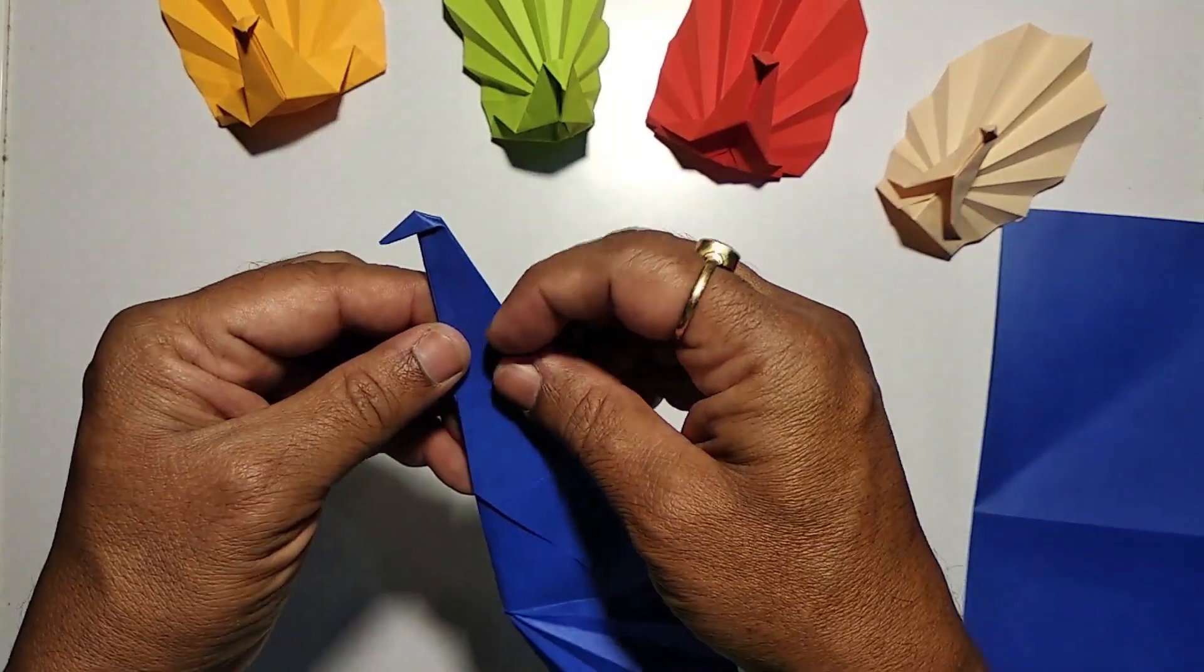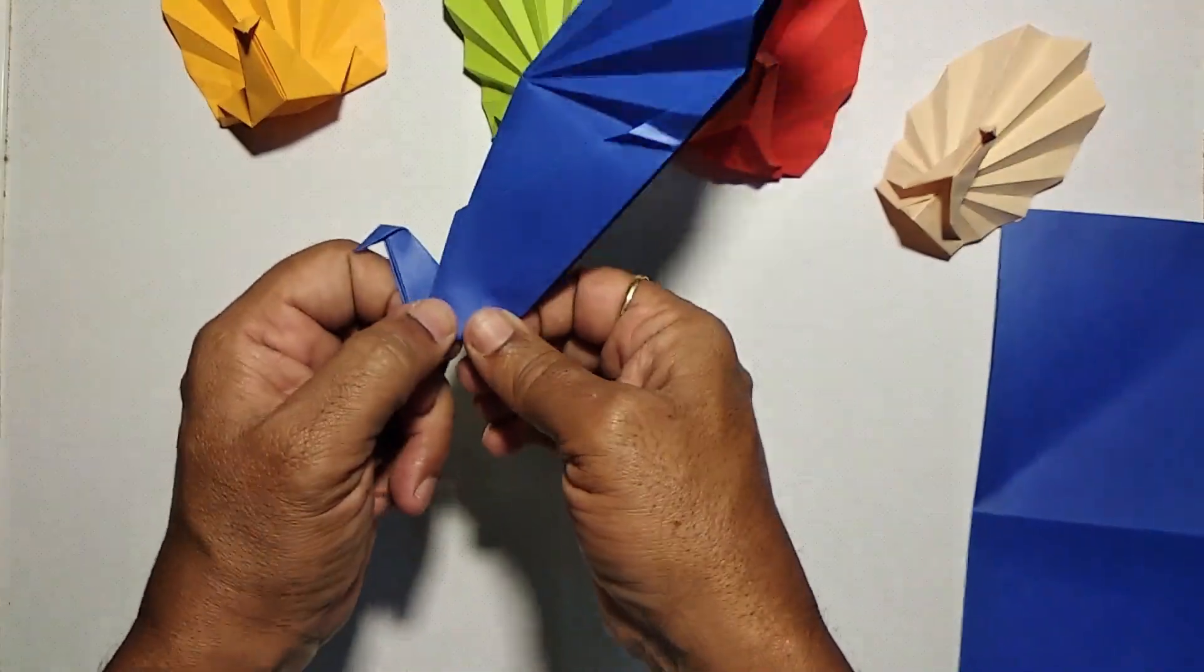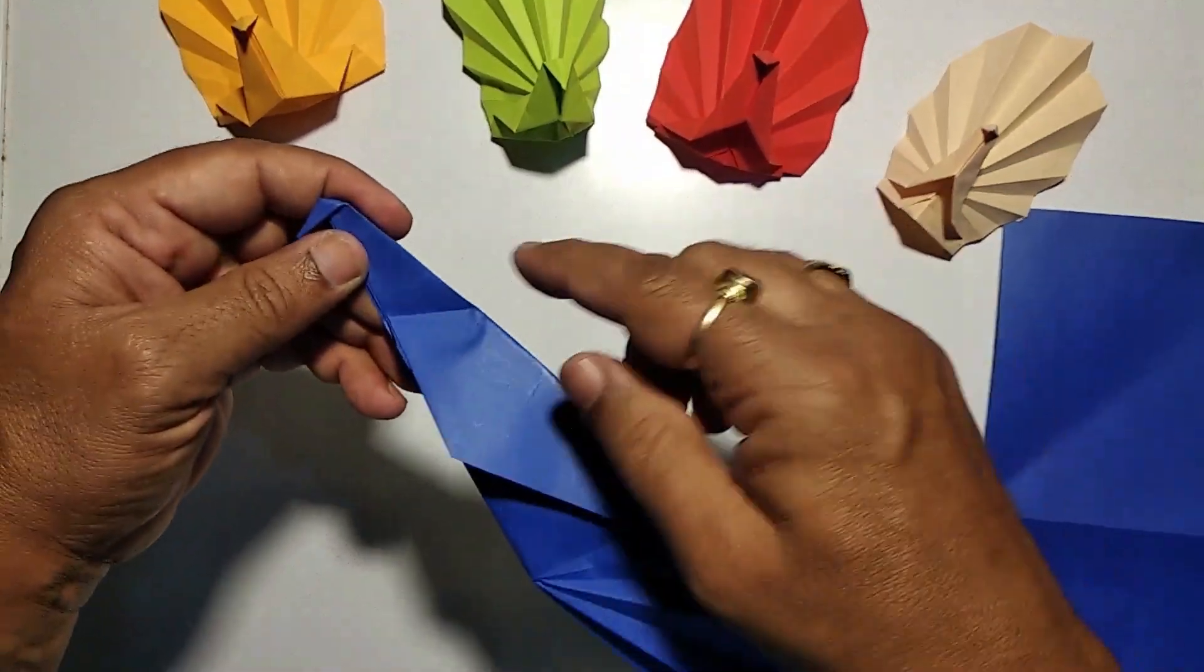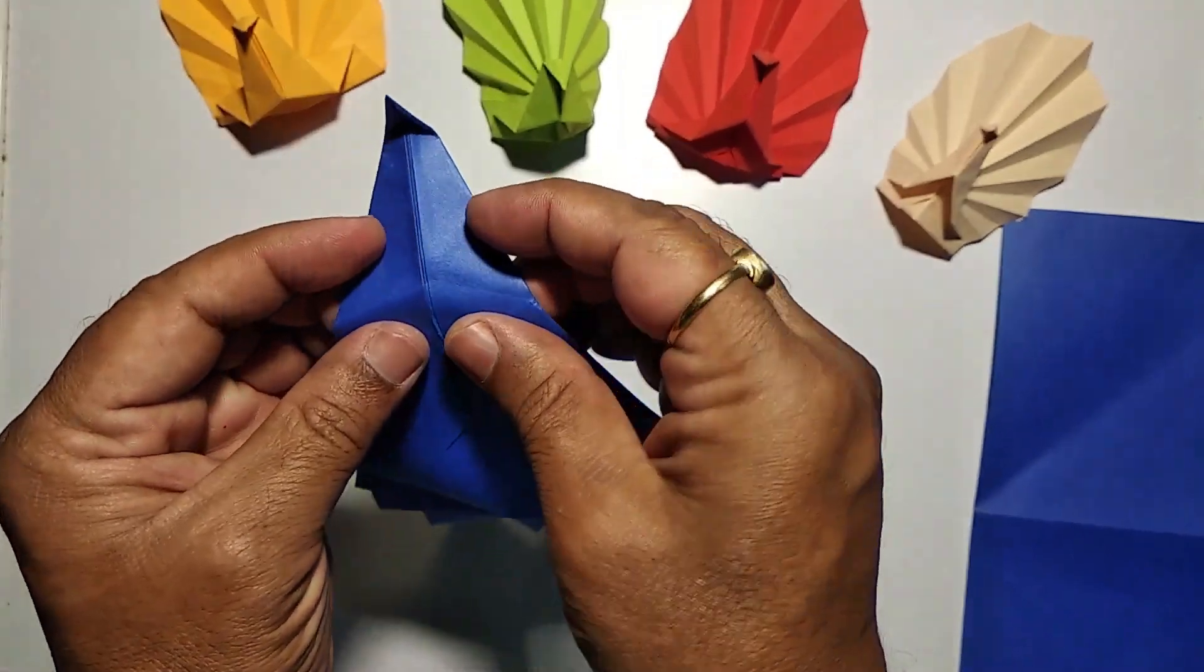Now let's try to form the neck of the bird. Fold it back on the same creases.